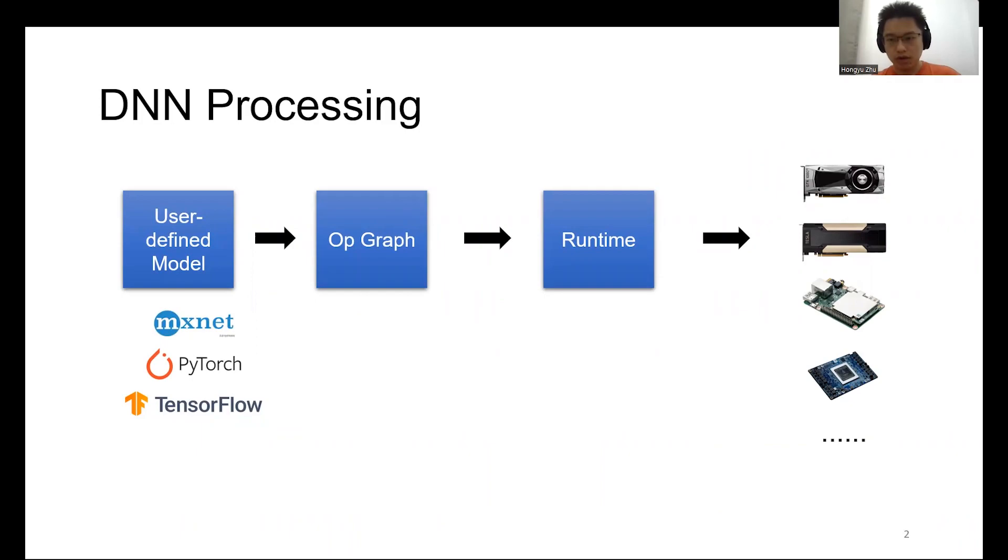DNN workloads are well known for their computation complexity. In practice, a DNN model defined by programmers will typically go through multiple levels of IR transformations and turn into a graph of basic operators. The execution time of the operators are vital to the overall performance.